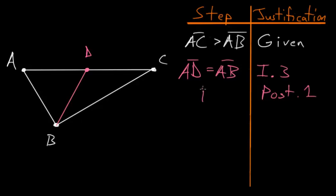So we just constructed the line BD, and now we want to use Book 1, Proposition number 16, which says that an exterior angle of a triangle is always bigger than either of the opposite interior angles.